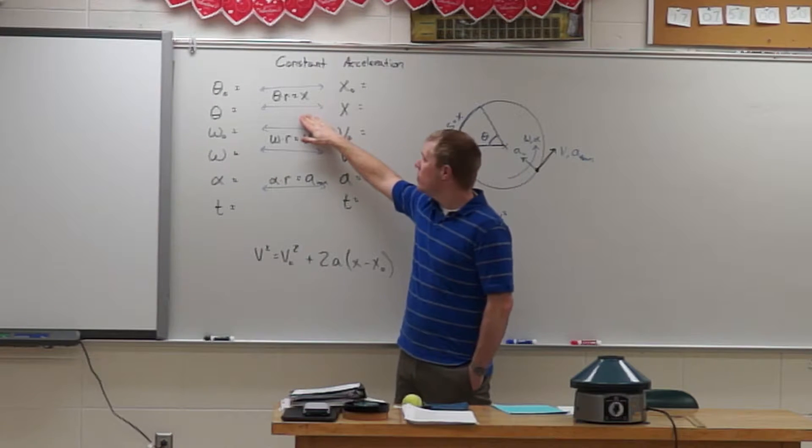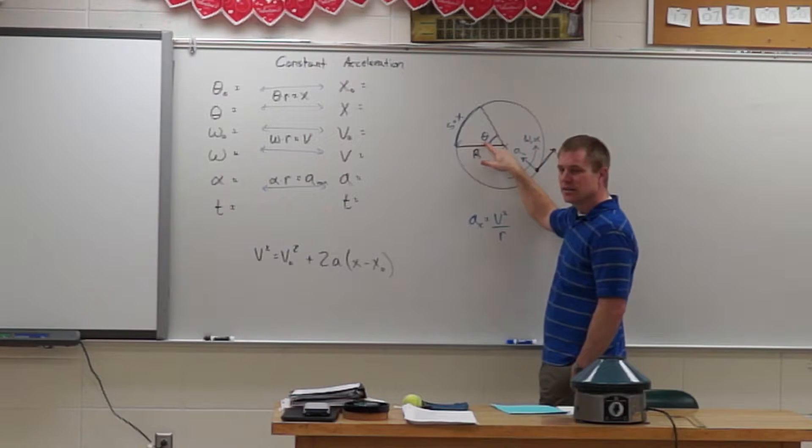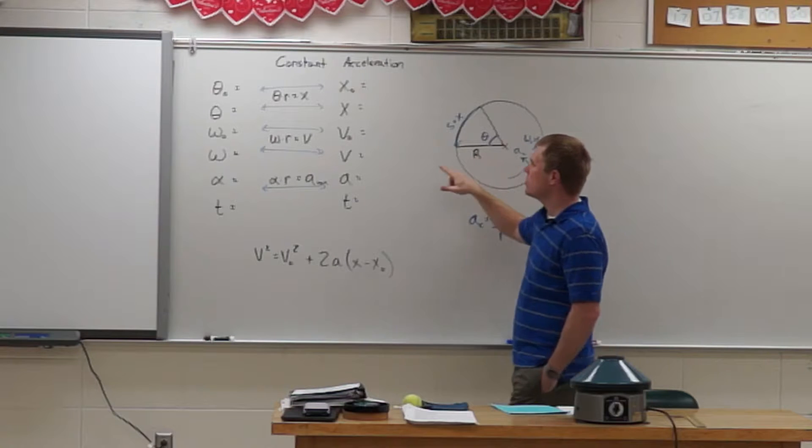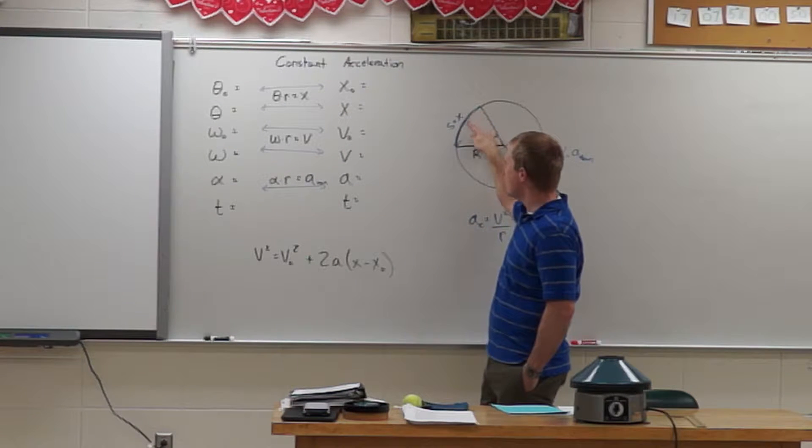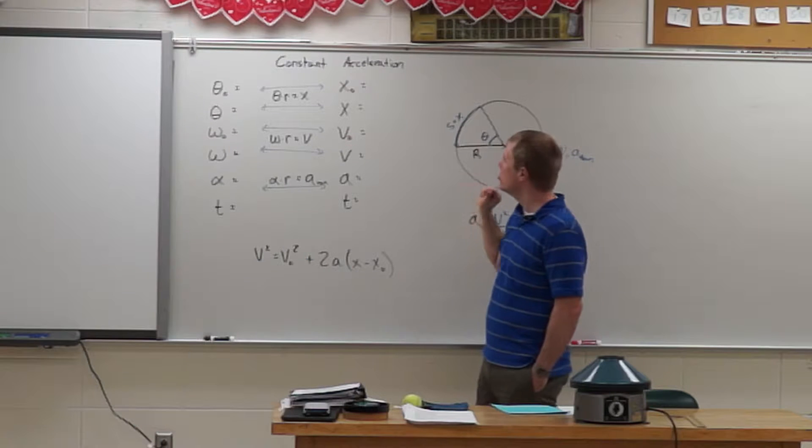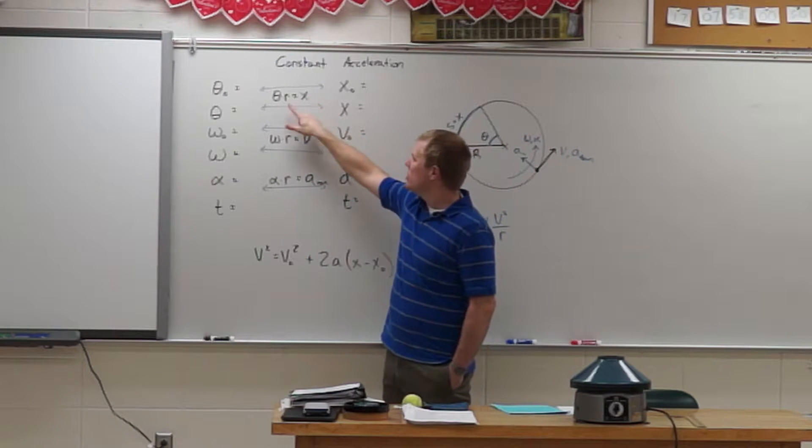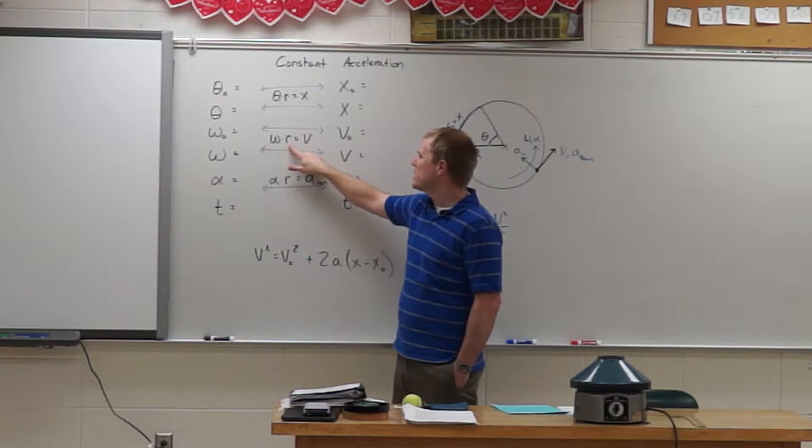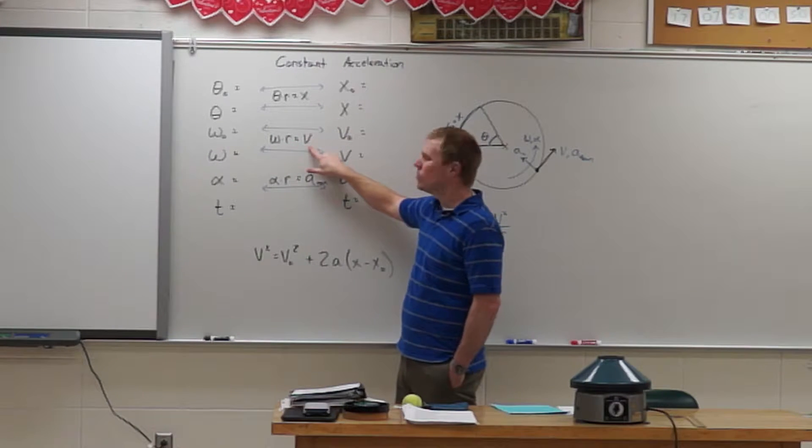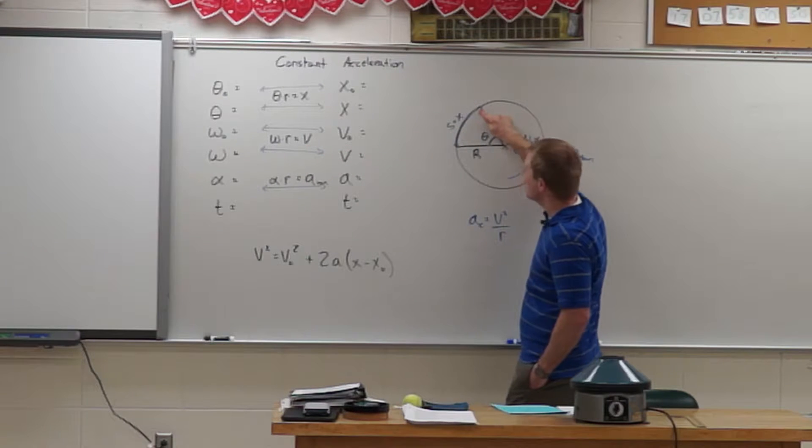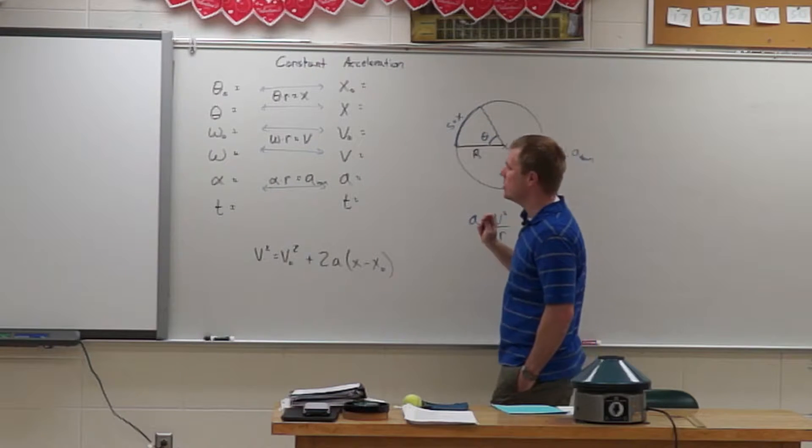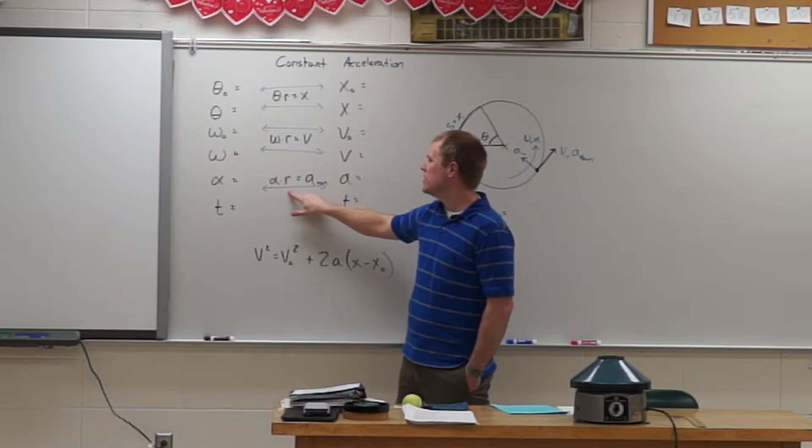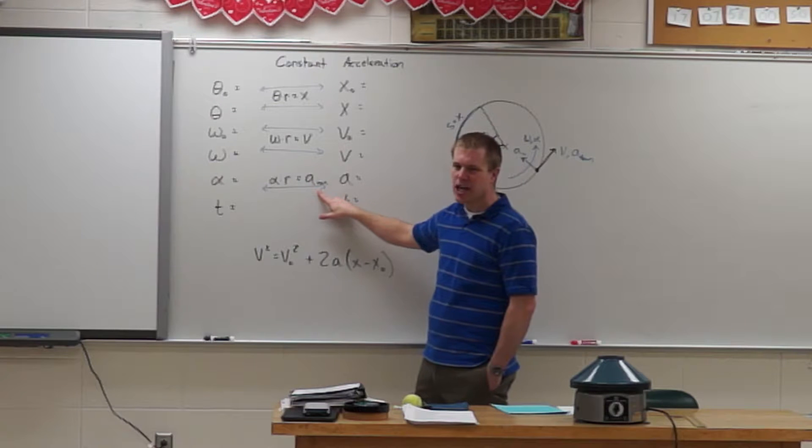How we get between those is we're going to use the relationship that the angle in radians is equal to the arc length divided by the radius. So I can solve for that arc length or that distance traveled on the outside edge. And then I can use that same relationship of theta times r equals x to say, the angular speed times the radius is equal to the linear speed. How fast is that object traveling around that outside edge? And then here, I can talk about the angular acceleration times the radius is equal to the tangential acceleration.